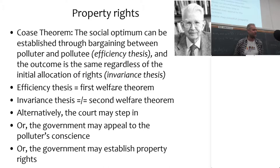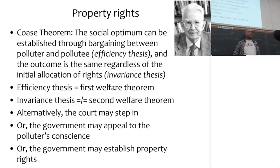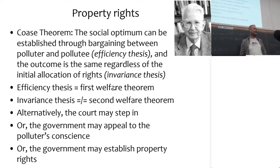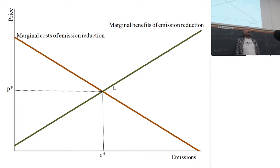The last of my institutional — my 'garbage bag' of policy instruments — has to do with property rights and the Coase theorem. The picture you see is Ronald Coase, one of the Nobel laureates in economics. The previous picture was Baumol, who shamefully did not get a Nobel Prize. Coase did, and he's one of the most controversial and peculiar figures in economics. The Coase theorem says that the social optimum can be established by bargaining between polluter and pollutee, and the outcome is the same regardless of the initial allocation of rights.